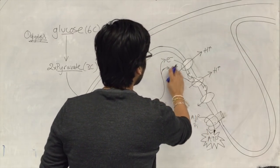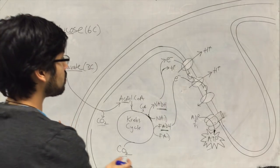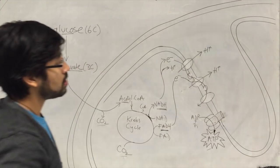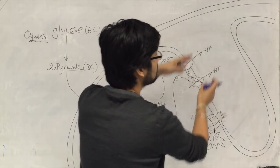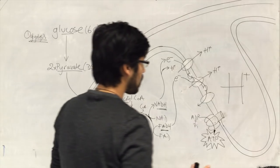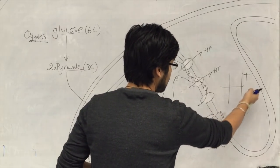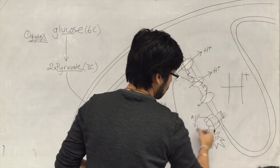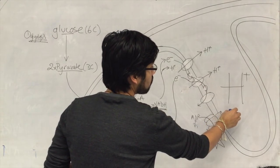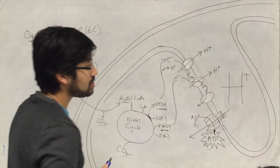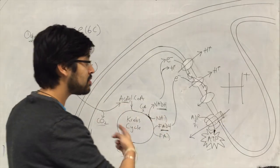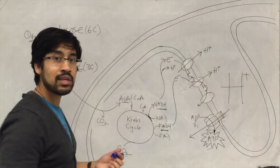We start to form a gradient — the more NADH and FADH provide electrons for this electron transport chain, the more protons we pump into the intermembrane space, generating a very large proton gradient. These protons then move back down the proton gradient through a protein called ATP synthase. As the protons move through ATP synthase, it drives the synthesis of ATP from ADP and a phosphate group.